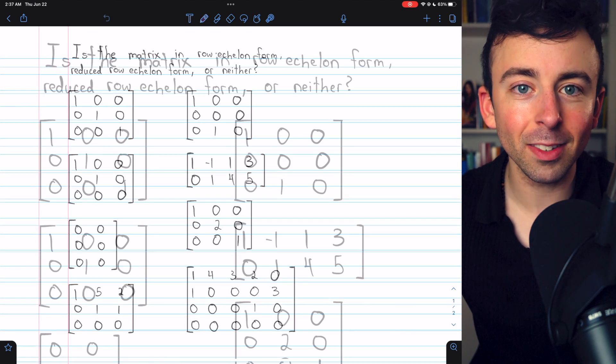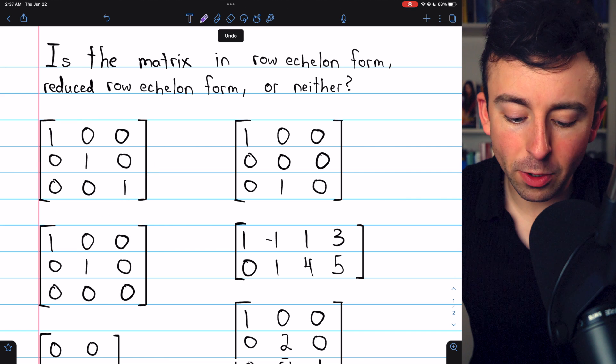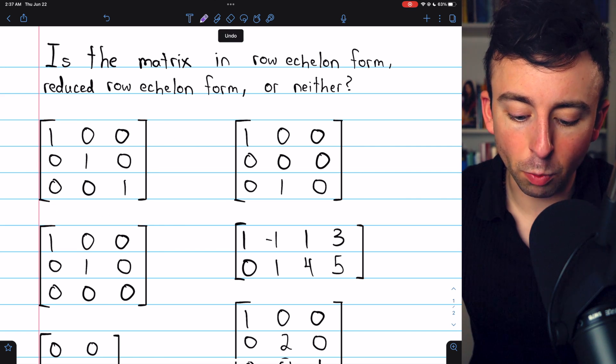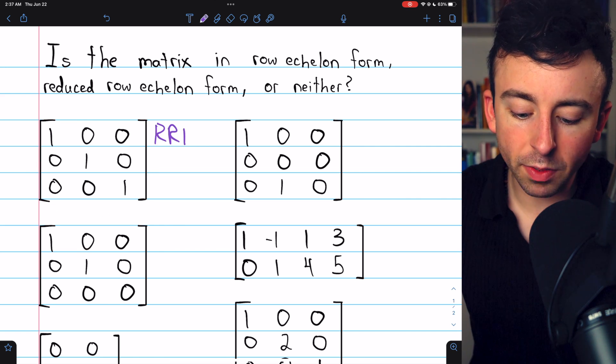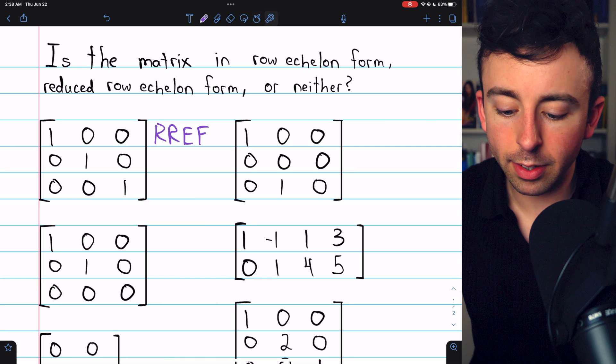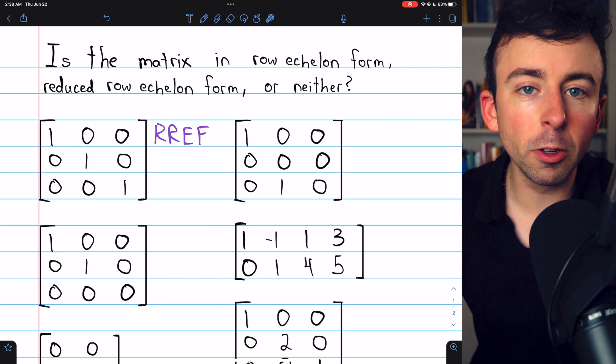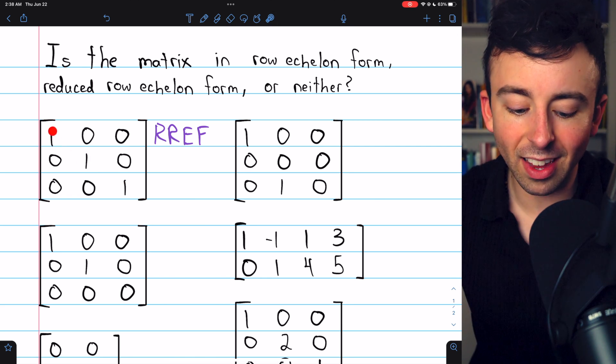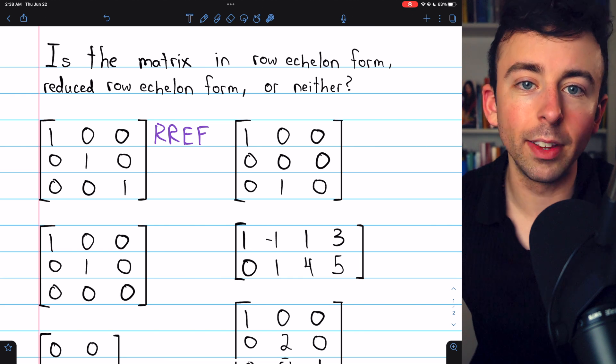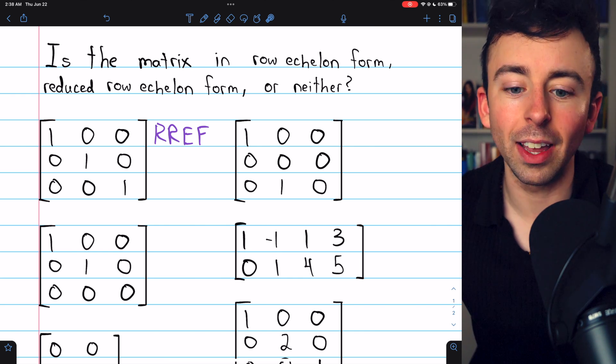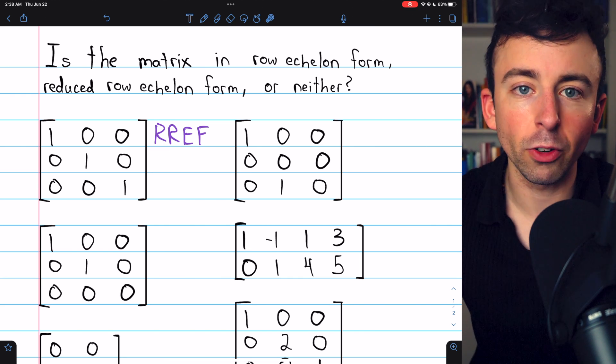Let's go over the solutions. This first matrix is the identity matrix. It's clearly in reduced row echelon form. All of the leading entries are ones. They follow the staircase pattern, and there are zeros in the columns aside from the leading ones. Above and below those leading ones, you've got zeros. It's in reduced row echelon form.